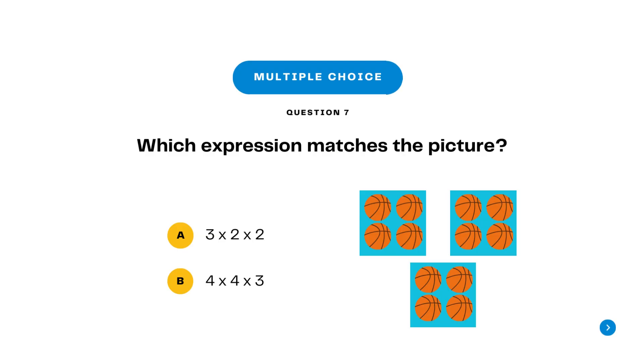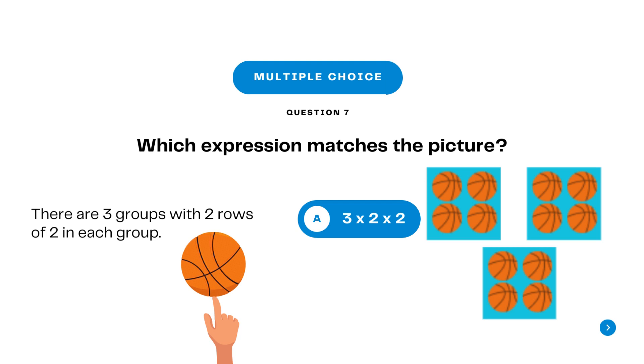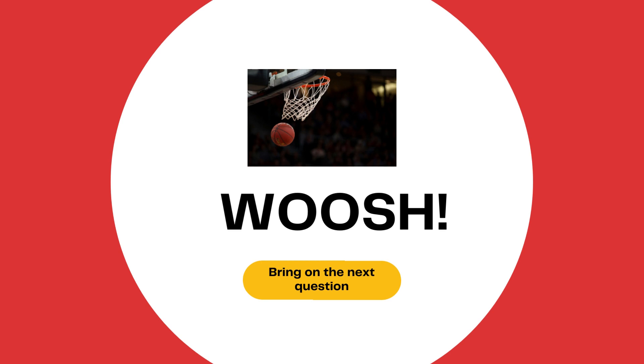Question number seven is multiple choice. Which expression matches the picture? A) three times two times two times two, B) four times four times three. Pause here and then press play when you have your answers ready. Answer: A) three times two times two times two. There are three groups with two rows of two in each group. Whoosh, bring on the next question.